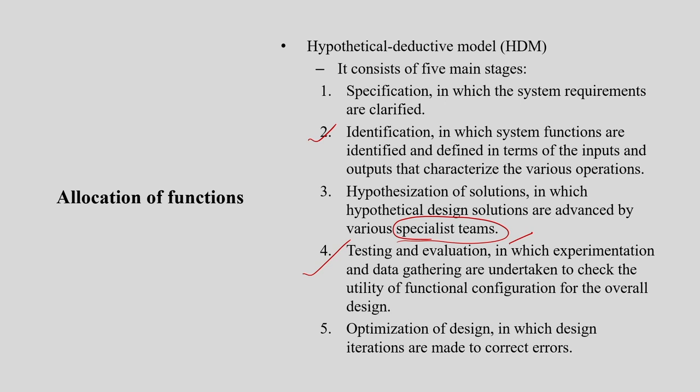In the last stage, you do optimization, in which design interactions are made to correct errors. In the testing phase, you get data and understand where errors may happen. It is not possible to make it completely error-free, but you can optimize it until productivity is achieved as per the requirement. For all ergonomics methods, optimization of the process or system is always desirable.